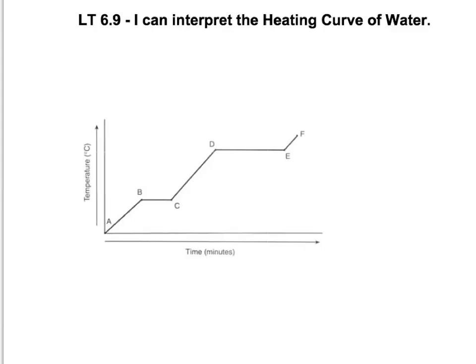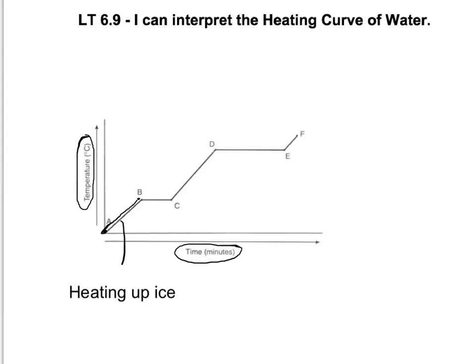Let's start at the origin, at point A, right here. So at point A, we start adding temperature — I know this because the graph is going up, and on my y-axis I have temperature. So over a period of time, which is on the x-axis, I am adding temperature, and I get all the way to point B. What I'm doing throughout that whole stretch between A and B is just heating up ice. It's staying ice the whole time, but I'm just heating it up.